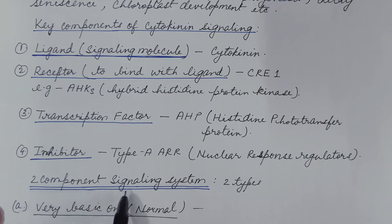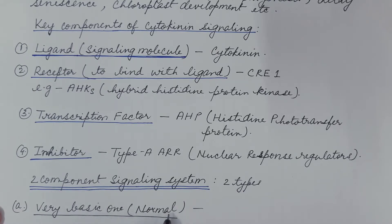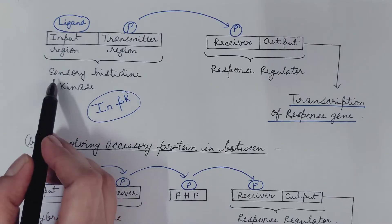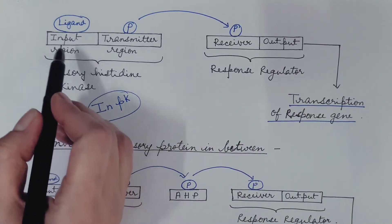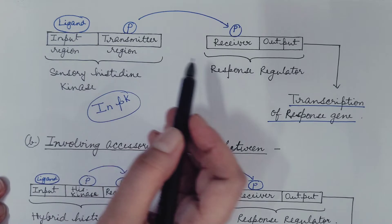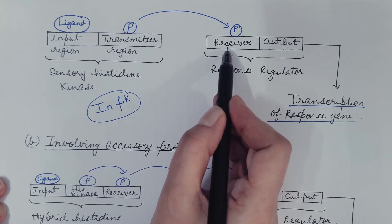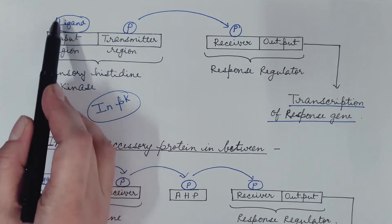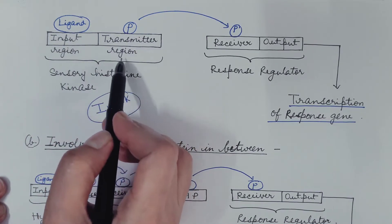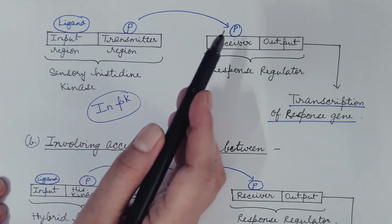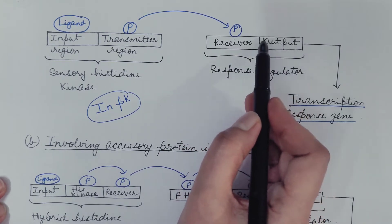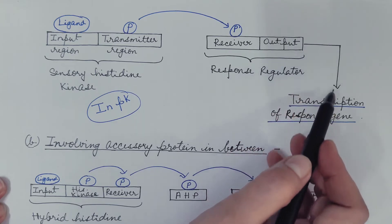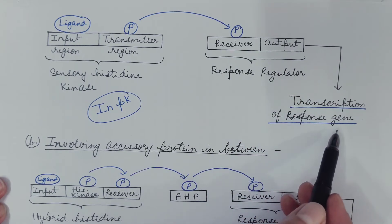Cytokinin signaling is a two-component signaling system, and it is of two types. The first is the basic or normal signaling system, which has two components: sensory histidine kinase and response regulator. Sensory histidine kinase is composed of an input region and a transmitter region, and the response regulator is composed of a receiver region and an output region. The ligand comes and binds with the input region, which leads to autophosphorylation of the transmitter region.